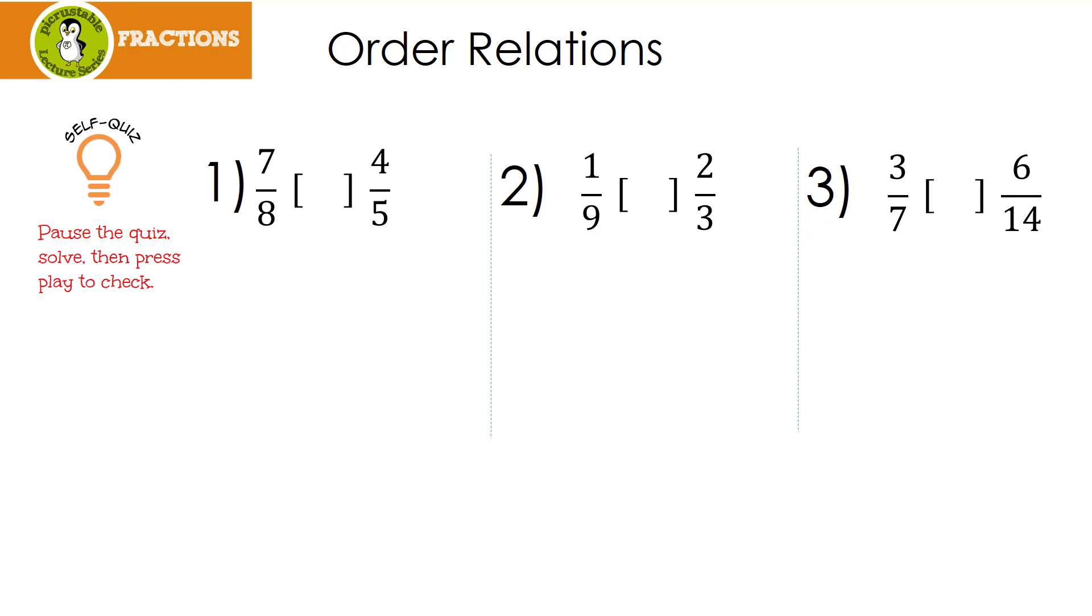Alright, let's see how you did. Let's look at number 1. The first thing that I did was multiply by each other's denominator. So I took 7 eighths times 5 over 5 and then 4 fifths times 8 over 8.